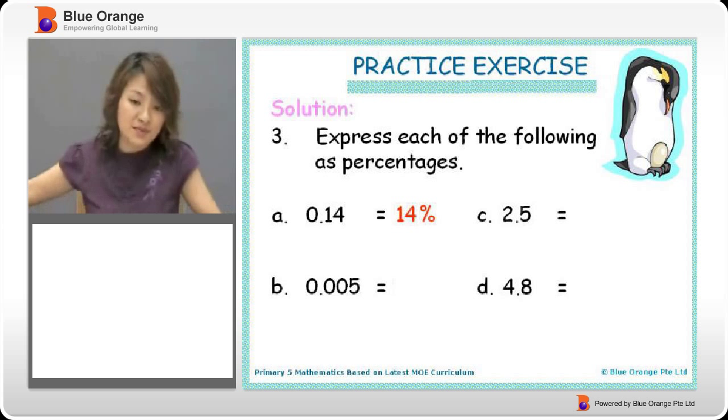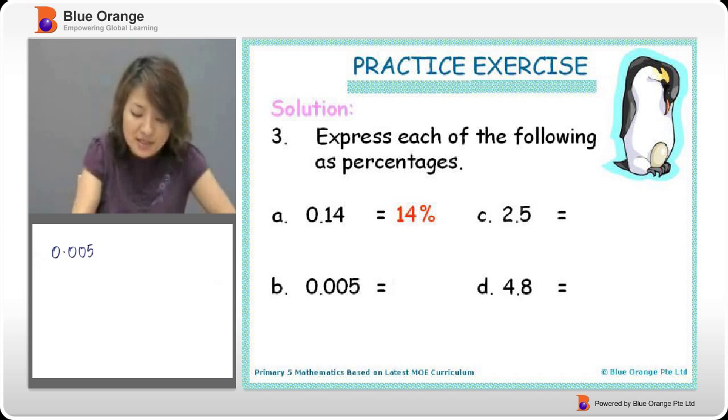How about B? 0.005 as a percentage. So we have 0.005. We change it into a fraction first, right? 1, 2, 3 decimals. 1, 2, 3 decimals. And since it's only a 5, we put a 5.